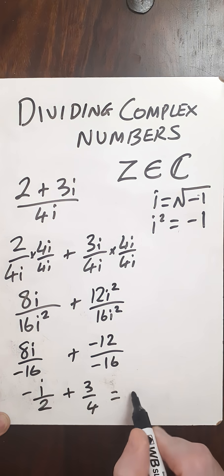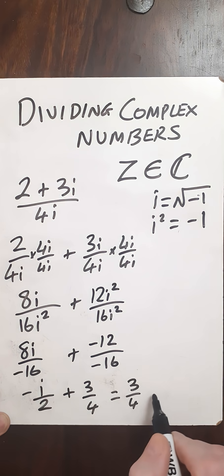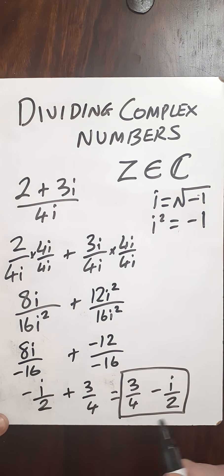And write that with the real part first, I've got 3 over 4 minus i over 2. And we are done.